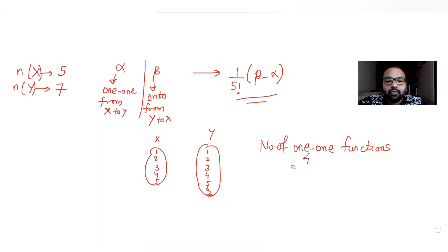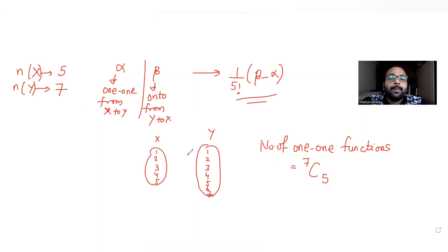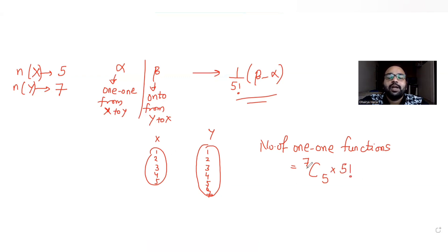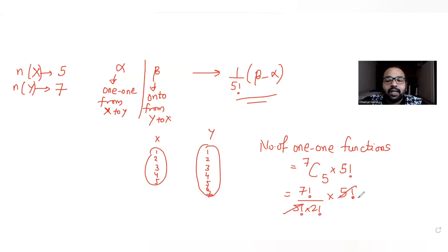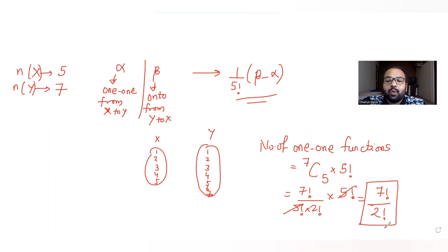To count one-to-one functions from X to Y: first select 5 elements out of 7 using combinations, giving 7C5. Those 5 selected elements can be arranged in 5! ways. So the number of one-to-one functions = 7C5 × 5! = (7! / (5! × 2!)) × 5! = 7! / 2!.